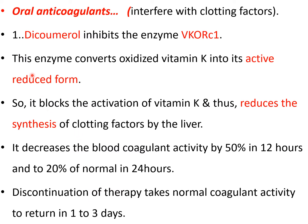While discussing the anticoagulants, let's start with the oral anticoagulants that interfere with clotting factors. Number one is dicoumarol. It inhibits an enzyme called VKORC1. This enzyme converts the oxidized vitamin K — that is, inactive vitamin K — into its active reduced form. So the drug dicoumarol blocks the activation of vitamin K and in this way reduces the synthesis of clotting factors that are dependent on vitamin K by the liver.